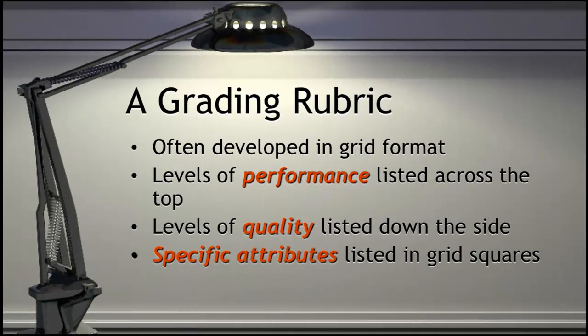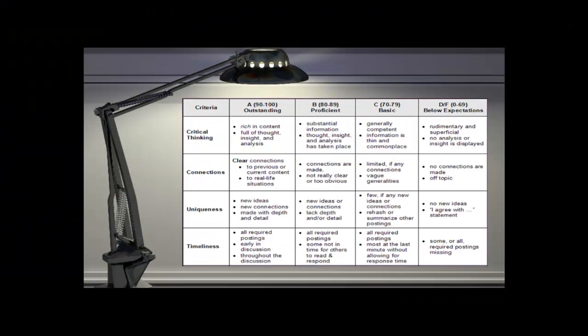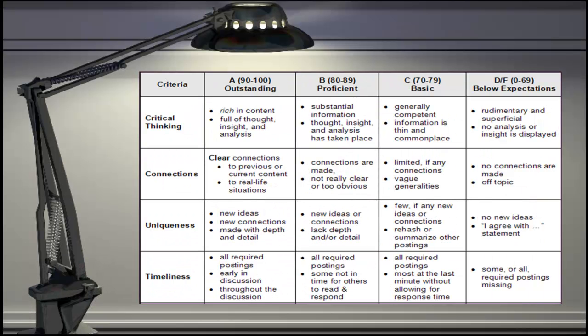Many times a rubric is developed in a grid format with the levels of performance listed across the top and the criteria listed down the side. Then, within each of the grid squares, the descriptors or specific attributes are listed. Here is an example of a rubric in grid format.